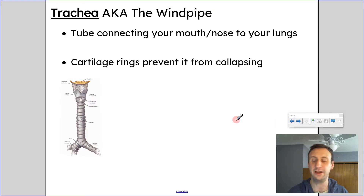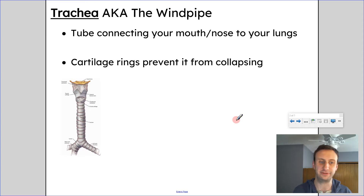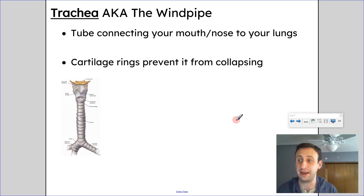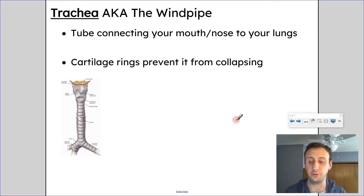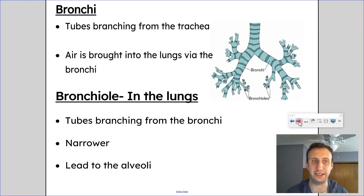First of all, the trachea, also known as the windpipe, is the tube connecting your mouth or nose to your lungs. This brings air into your lung system. There are cartilage rings around it in order to make sure that it is open. It's like a straw — if you squeeze the straw, you can't get air through. In the same way, we need to make sure that the trachea is reinforced so that air can continue to get through and it's not easily collapsed or crushed. That's the reason for these cartilage rings around the trachea.